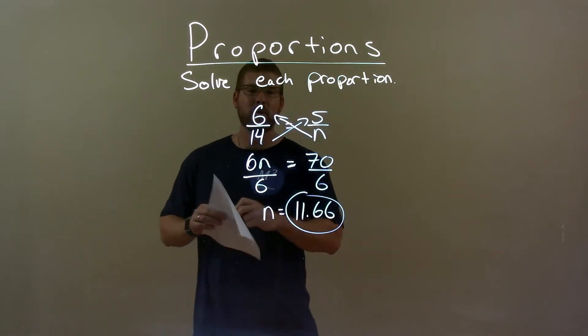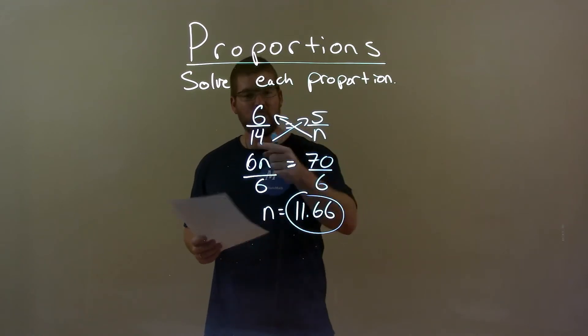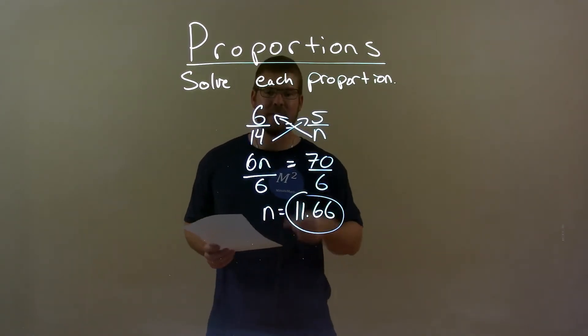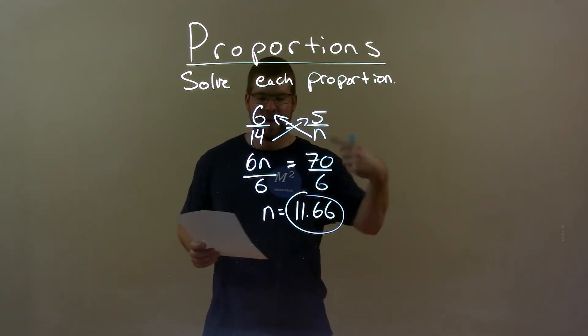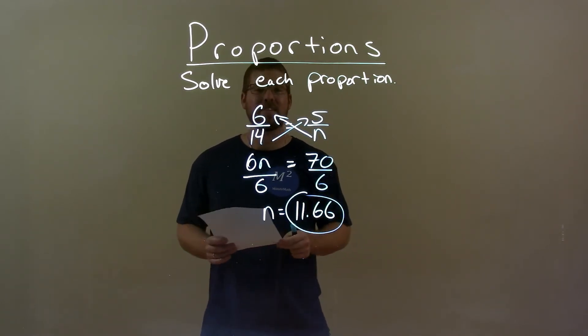Quick recap. We're given 6 over 14 equals 5 over n and we have to solve that proportion. Cross-multiply, got 6n equals 70. Then divided both sides by 6. n is by itself and it's equal to our final answer 11.66.